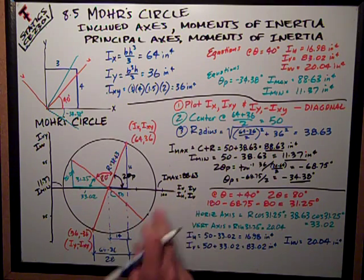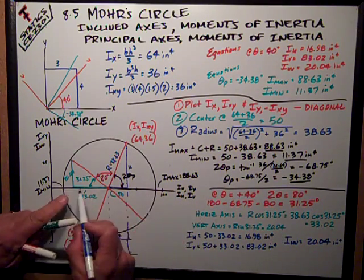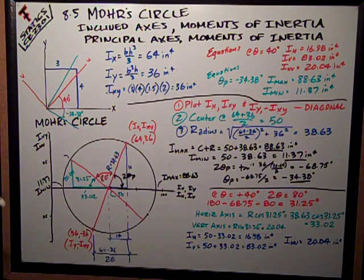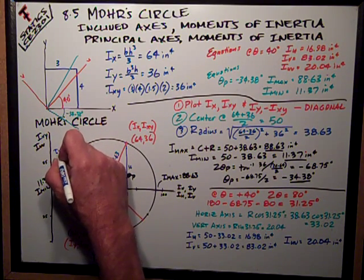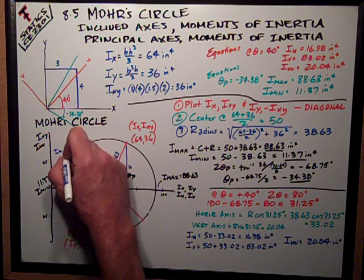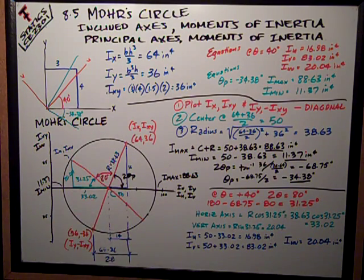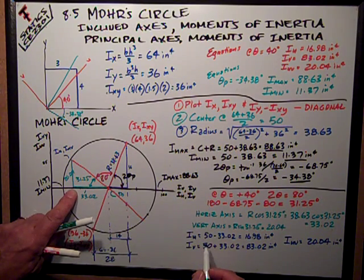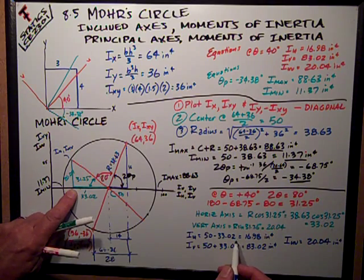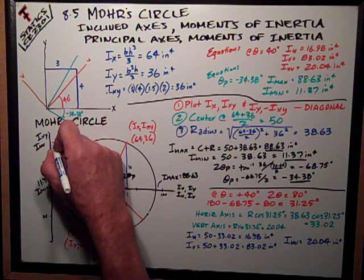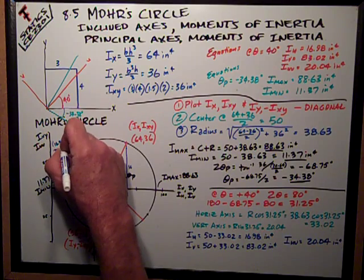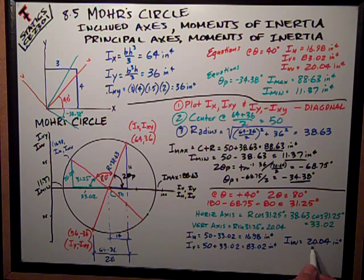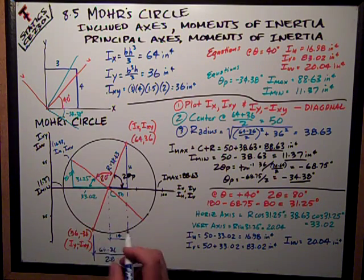Which is this, I want to compute the coordinates of this point right here. That is iu and iuv. Okay, iu is the center, 50, minus this distance, 33.02, or 16.98. The vertical component is just iuv, which is this leg here, 20.04.